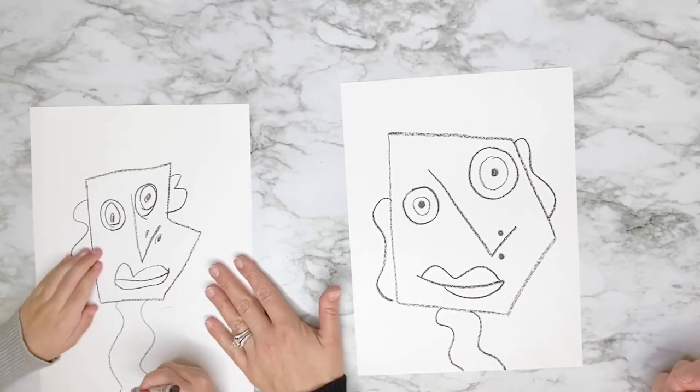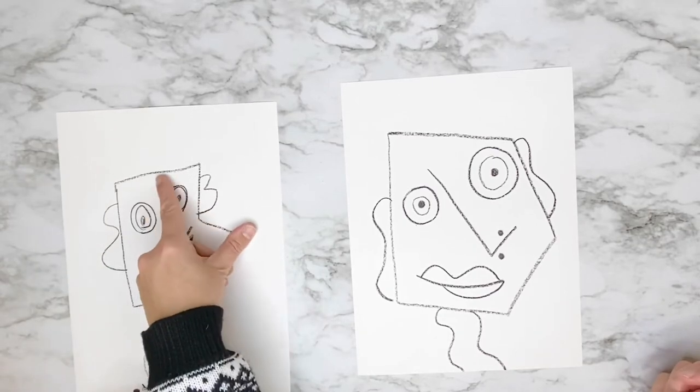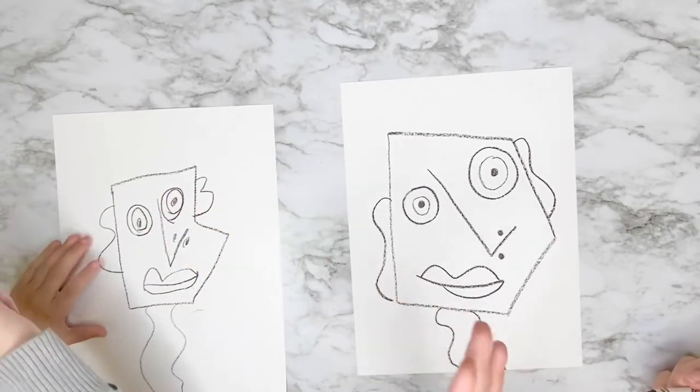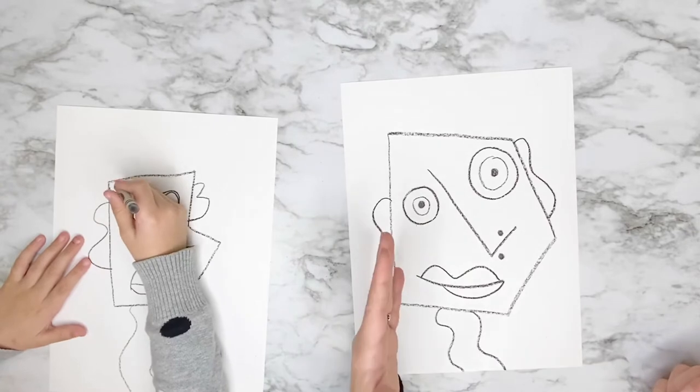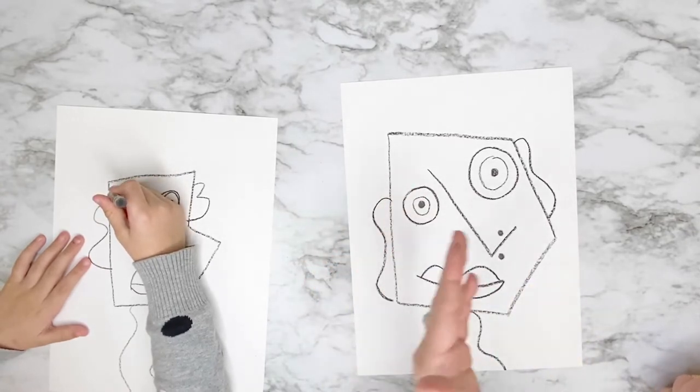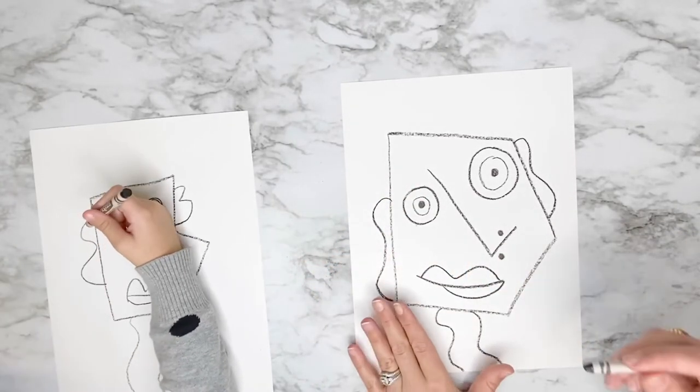Now we need to include some eyebrows up here above our eyes. So you can do angry eyes, you can do big fuzzy ones, you can do sideways ones, little teeny tiny ones, big ones. You decide.